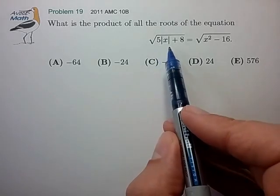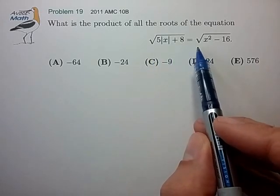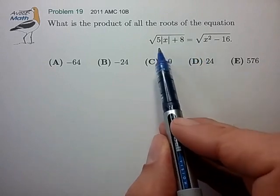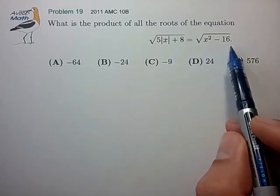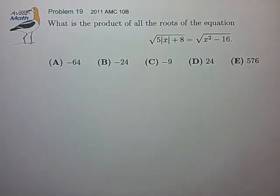We have absolute value signs around the x variable, and we have two sets of square root signs, so we'll have to be careful to keep the expressions underneath the square root signs from going negative. But other than that, it looks pretty straightforward, so let's see how we can proceed.